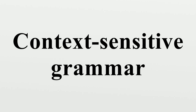Chomsky introduced context-sensitive grammars as a way to describe the syntax of natural language, where it is indeed often the case that a word may or may not be appropriate in a certain place depending upon the context. Walter Savage has criticized the terminology 'context-sensitive' as misleading and proposed 'non-erasing' as better explaining the distinction between a CSG and an unrestricted grammar. Although it is well known that certain features of languages are not context-free, it is an open research question how much of CSG expressive power is actually needed to capture the context-sensitivity found in natural languages.